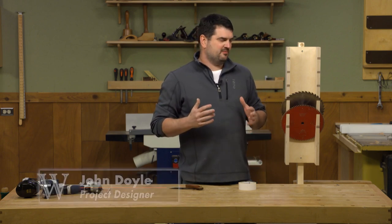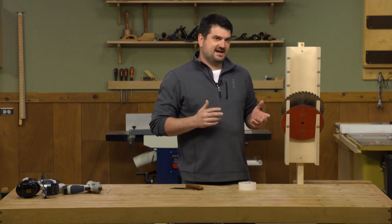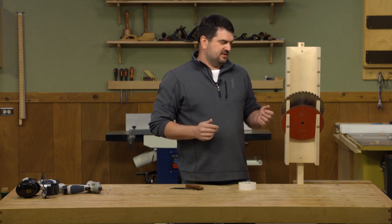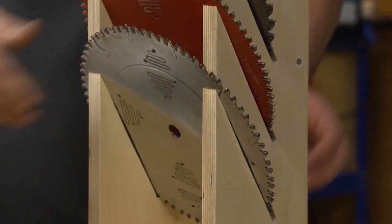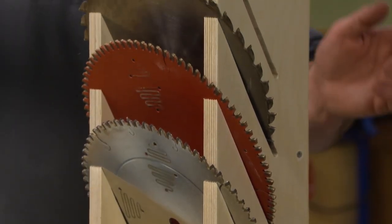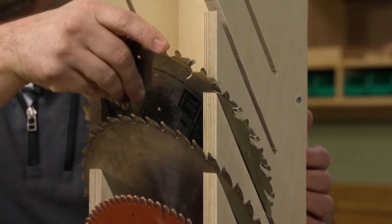In my workshop, I like to keep all my bits and blades right at hand, but I also want to keep them from bumping into each other and chipping the carbide on the blade or the teeth. So I want to show you a really easy table saw rack that I built for my shop.